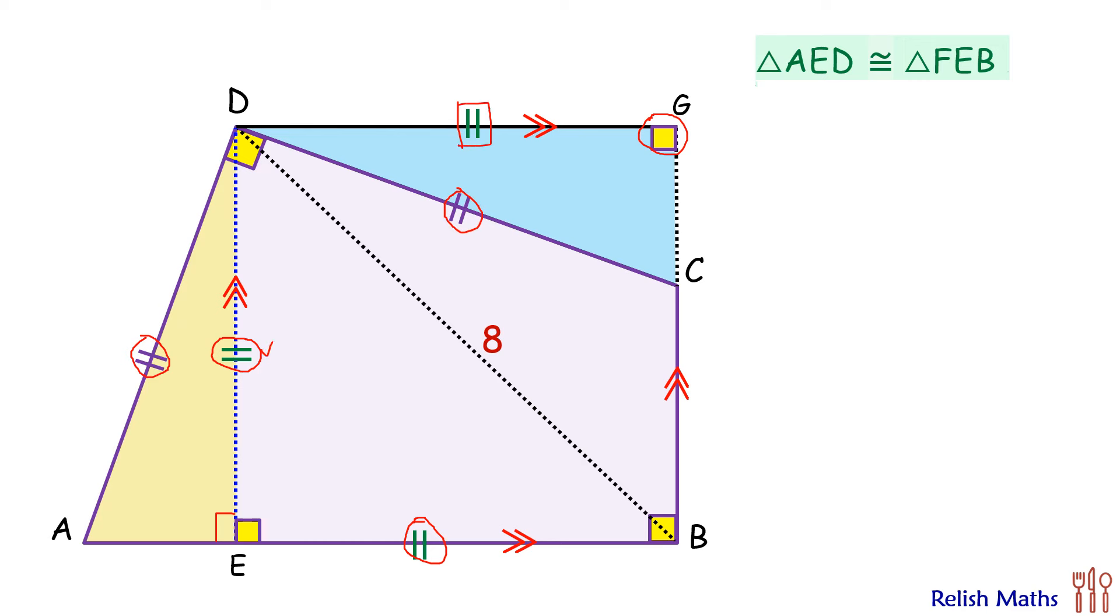So by RHS we can say that yellow triangle and blue triangle, they are congruent to each other. Or we can say triangle AED is congruent to triangle CGD, or we can say that this yellow triangle area and blue triangle area are equal.